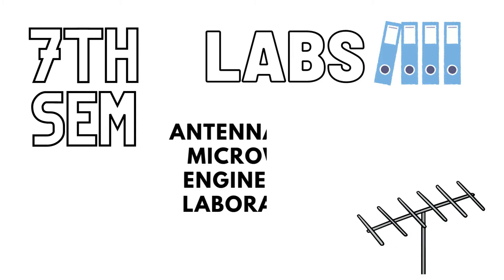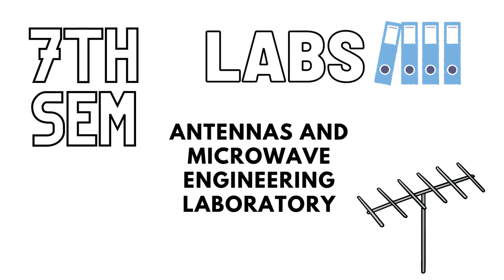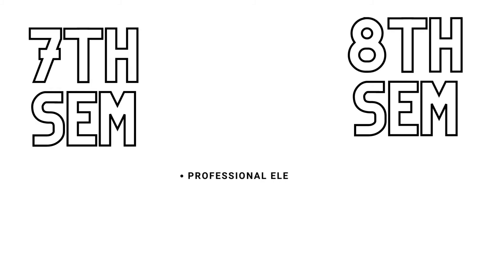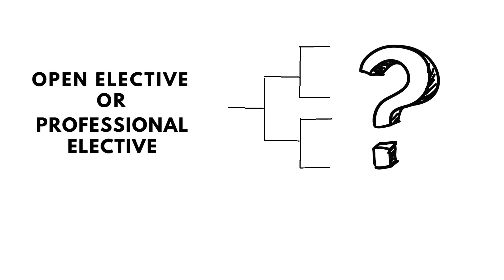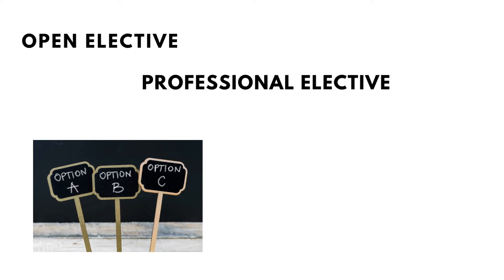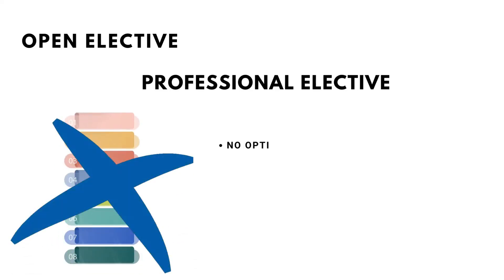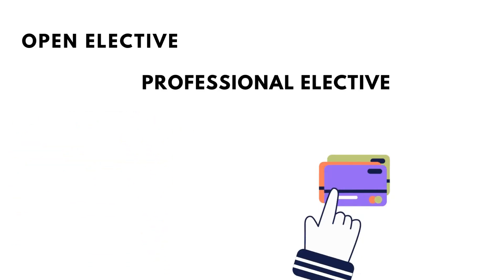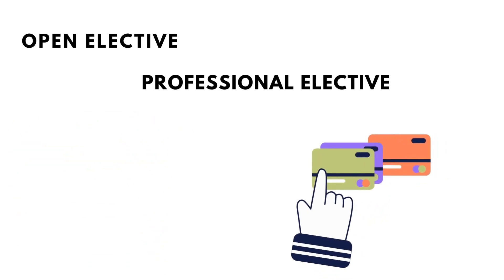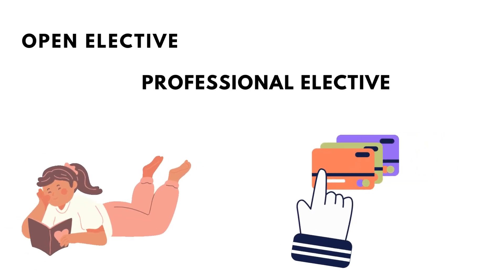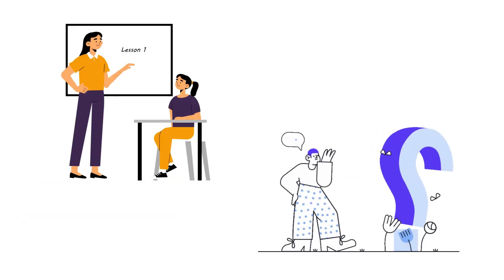In the seventh and eighth semesters there are professional electives and open electives. These subjects vary widely and cannot be predicted in advance, as the choices depend on your college. You have to choose subjects based on what your college offers, so the elective subjects differ from college to college.